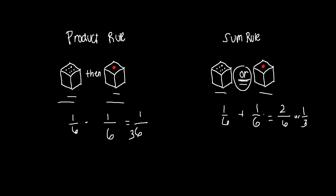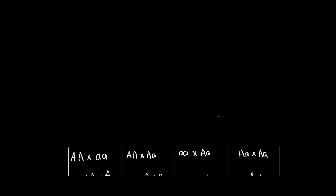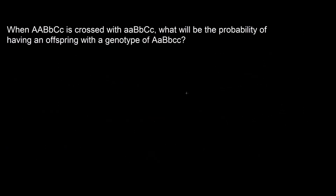Now that those concepts are cleared up, we can proceed to the question. When an individual with the genotype homozygous dominant A, heterozygous B, heterozygous C is crossed with an individual with homozygous recessive A, heterozygous B, and heterozygous C, what will be the probability of having an offspring with the genotype heterozygous A, heterozygous B, and homozygous recessive C?